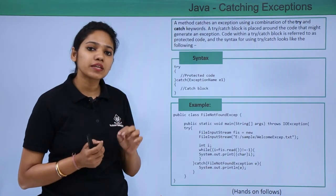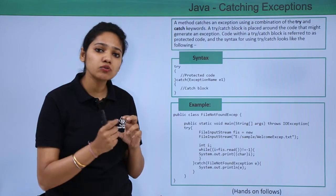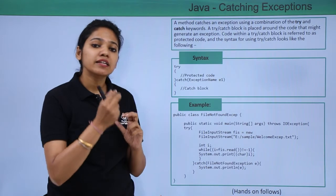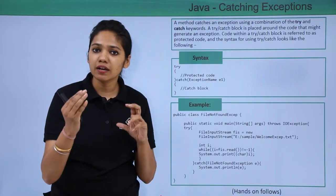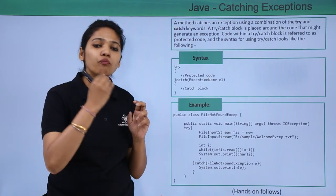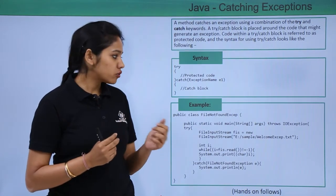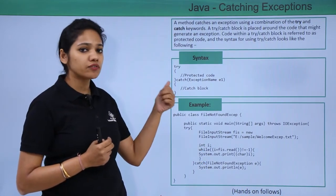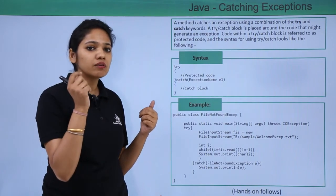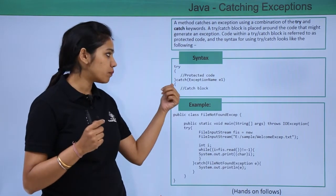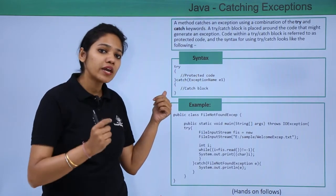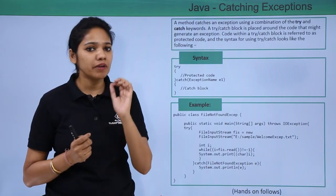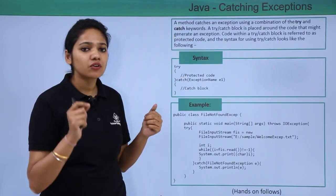A try block is something which identifies a section of your program where the exception may occur. You write the try keyword with open and close braces, and inside you write the code where you are expecting or anticipating the error may occur. That code is written under your try block.